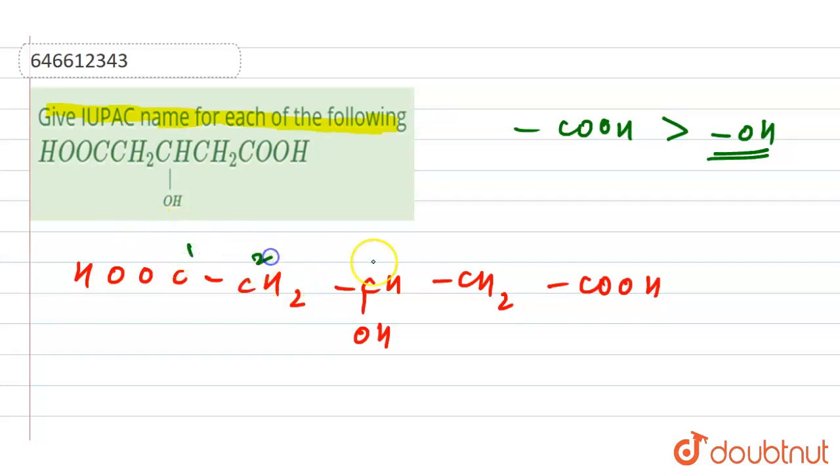So this is our hydroxy group, this is hydroxy, and at the first and fifth position we have the oic acid, that is our oic acid. So here how we can write it?